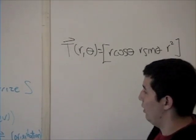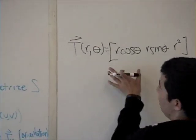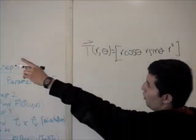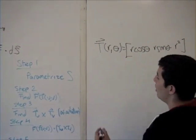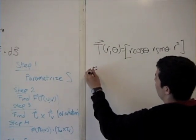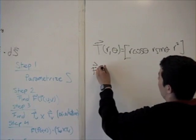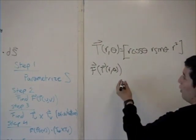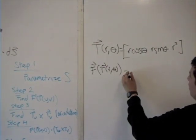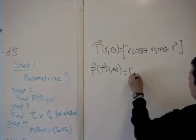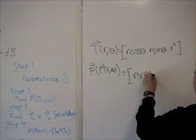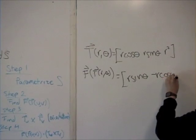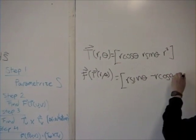And then we plug this function into our flux vector. And we can see that this new vector is going to be <r sin(θ), -r cos(θ), 1>.